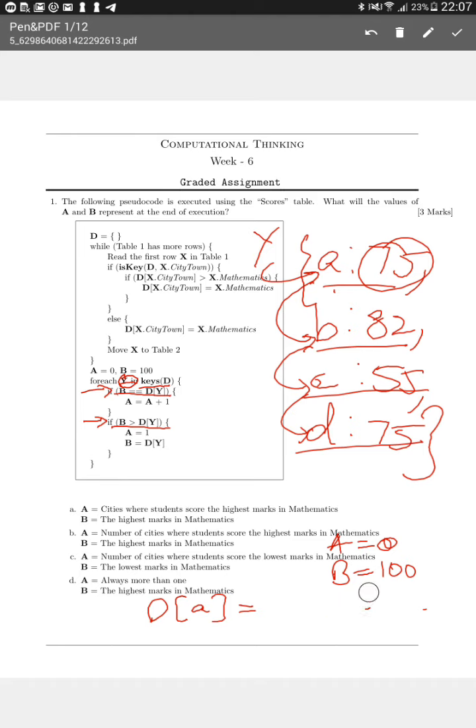In the second if statement it checks if your value of B, which is 100 in the first iteration, is greater than 75. It is greater than 75, so it enters this if statement and initializes the value of A to 1. So now your A is no longer 0, it is 1. Your value of B is now assigned to D[Y], so here your value of B actually now becomes 75, and then you go into your second iteration.